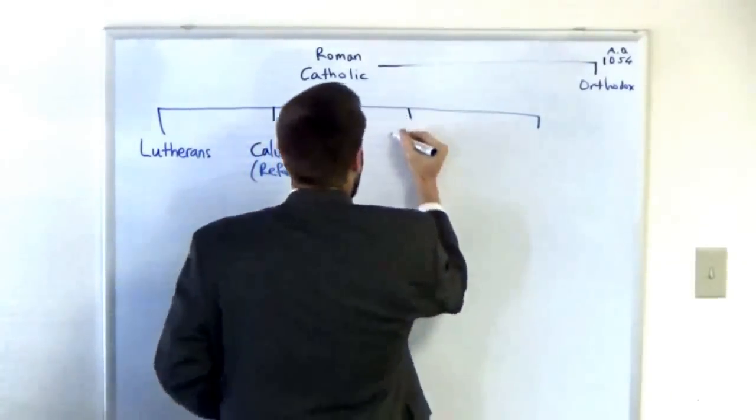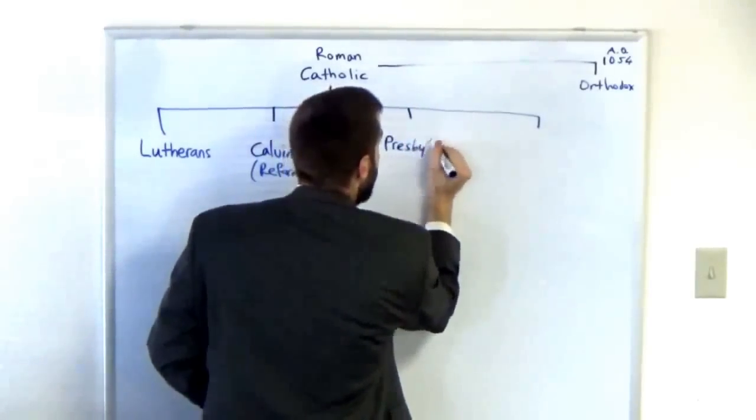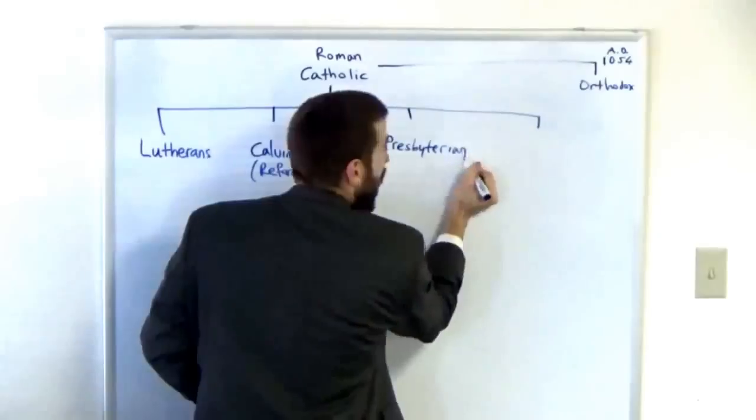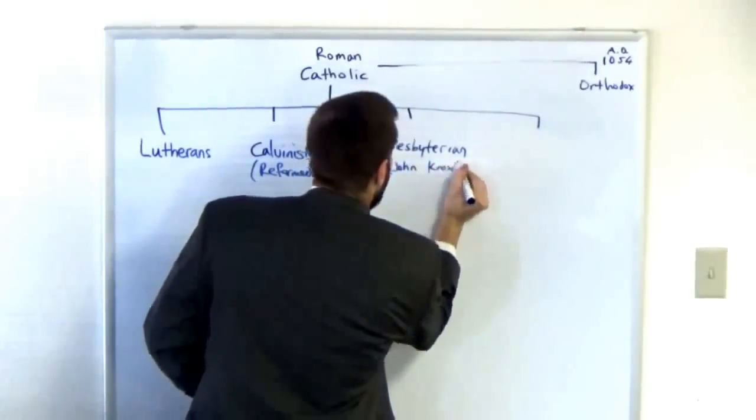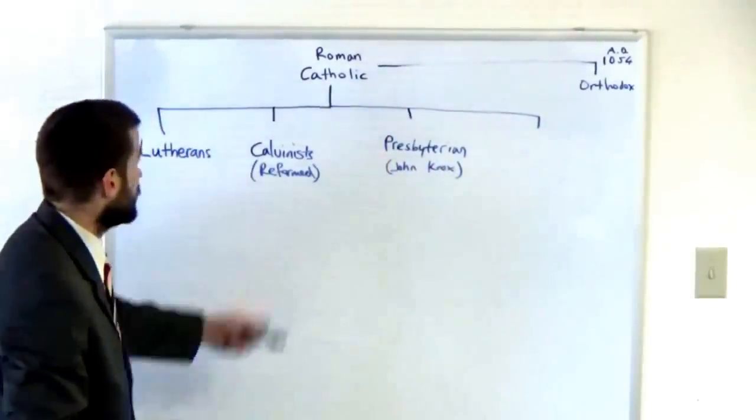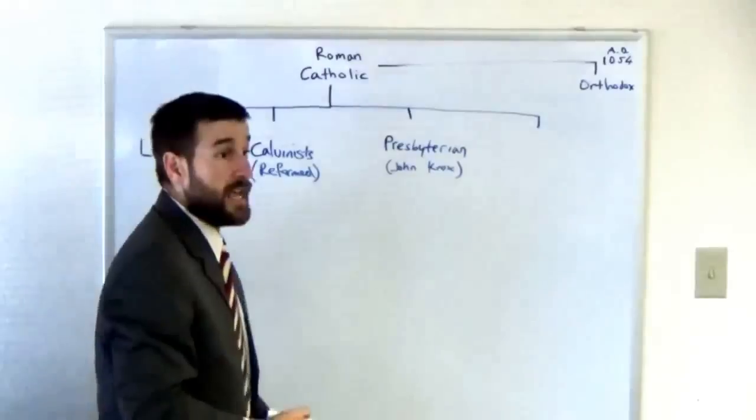Over here you've got your Presbyterians. The Presbyterians go back to a guy by the name of John Knox in Scotland. Pretty much the same doctrine of John Calvin, but John Calvin's in Switzerland and John Knox is over in Scotland.